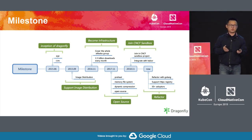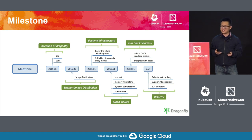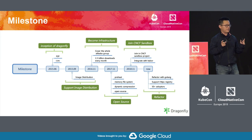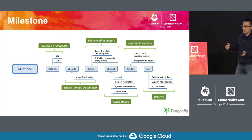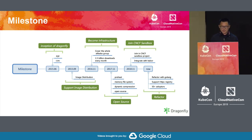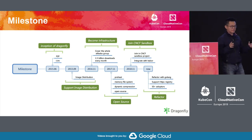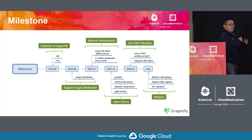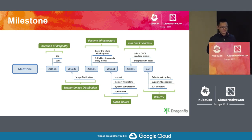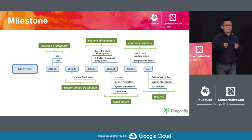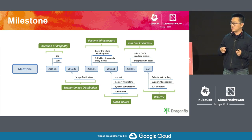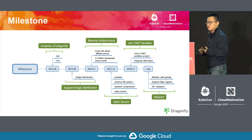Docker was born in 2013 and became very popular around 2015. In late 2015, we tried to make Dragonfly support image distribution — not only file distribution, but also image distribution. By November 2016, Dragonfly had already become a fundamental infrastructure tool in Alibaba Group, covering almost all scenarios of image and file distribution. We then open-sourced Dragonfly and discussed with the ecosystem and customers whether we could make it more standard to serve a wider community.